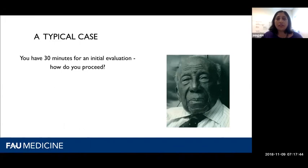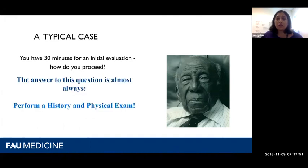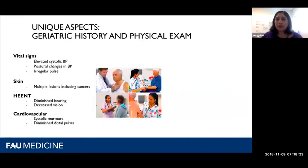The answer is almost always performing a history and physical exam — that's always the right answer. If a patient vignette asks what's the first thing you should do and history and physical exam is a choice, that's the one you pick. Talking to the patient is critical. In older adults, however, there are often unique aspects to the physical exam. Not every older adult, but many — and if we're not looking for these things, we may not find them.